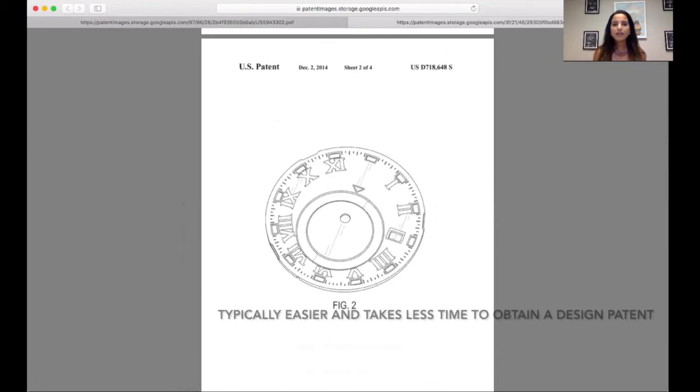As far as timeframe goes and length of the process, it is typically easier and shorter to obtain a design patent than it is to obtain a utility patent, unless you expedite the process and pay the extra fee. Now you can do that for both of them. Design patents tend to be cheaper than utility patents. You can protect your design with fees for around $3,000, maybe less than that.